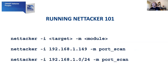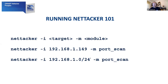So how do you run NetTacker? In order to run NetTacker from the command line, you need to define two parameters: the target — what do you want to scan — and the module — which module do you want to scan with. You do it with the -i command line switch where you define your target, and -m for your module. For example, if I want to perform a port scan on IP address 192.168.1.149, I will call NetTacker with -i and the IP address and -m with the port scan module. You can also scan not just one IP address but the whole network — for example, if you provide 192.168.1.0/24 you will scan the entire Class C network or 255 IP addresses.